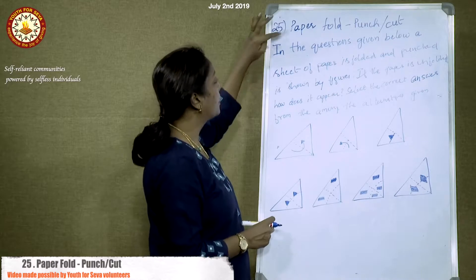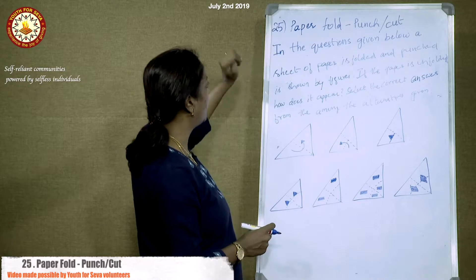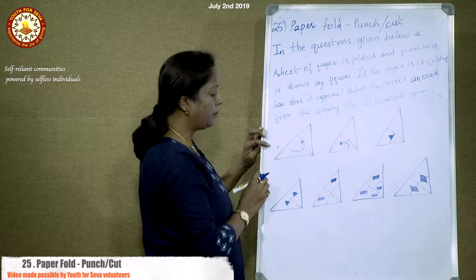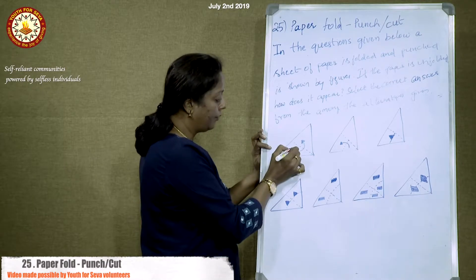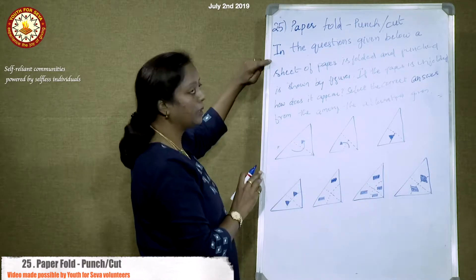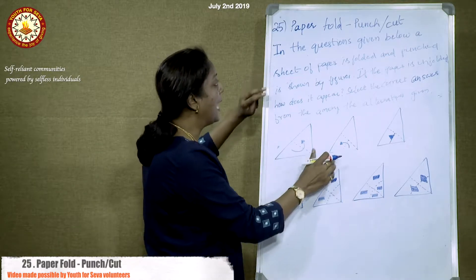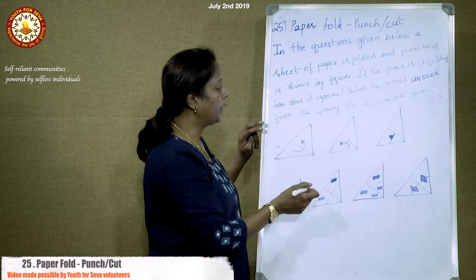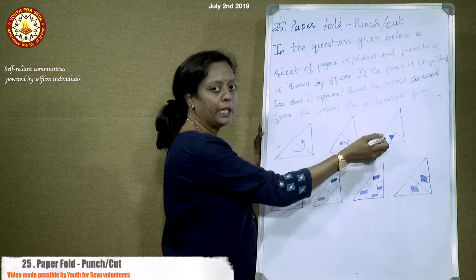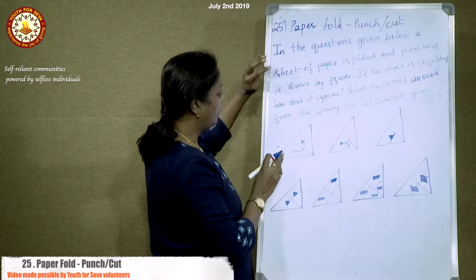The next topic is paper fold or punch out, and paper fold punch or cutter. In the questions given below, a sheet of paper is folded — the paper folding is shown step by step. The paper is folded, and then punched as shown in the figure. A punch means we are making a hole in a particular shape.